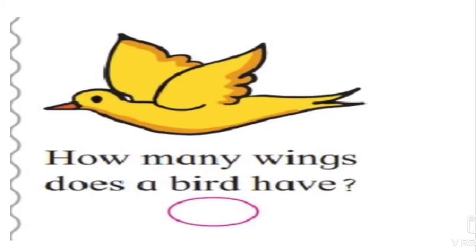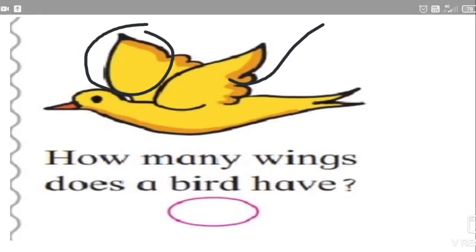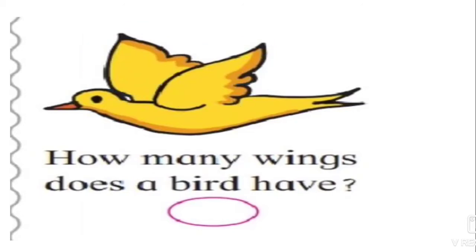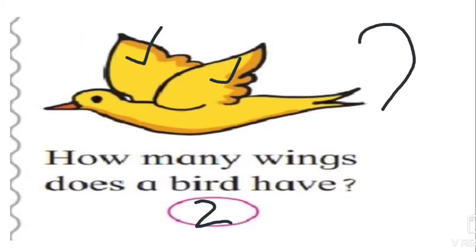First, tell me — what is this? This is a bird. What you have to do is write the correct number. How many wings does a bird have? These are the wings. Let's count: one, two. A bird has two wings. Let's write two in this empty space. How to write two — we learned in the previous videos. Write two like this.